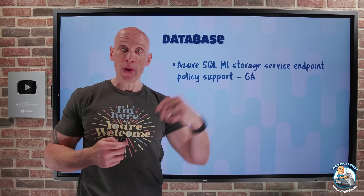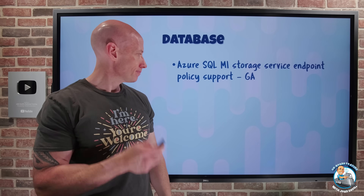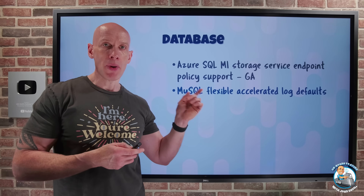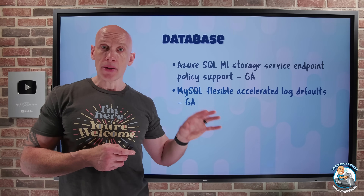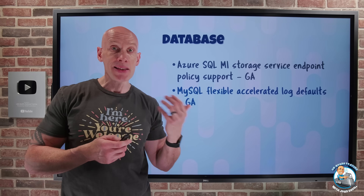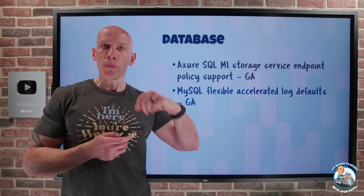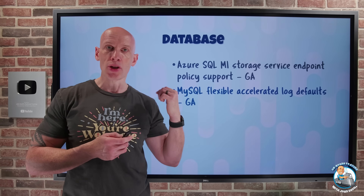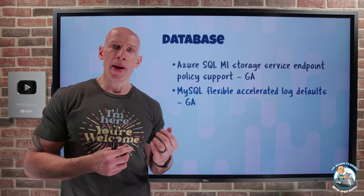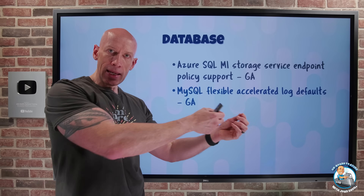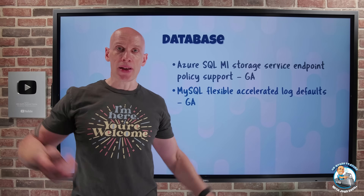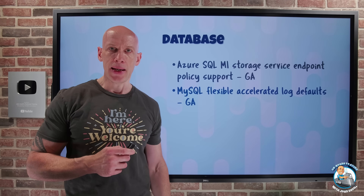MySQL Flexible now has accelerated logs by default. For any new instance you create, accelerated logs will be the default option. You can also enable it on any existing server, though there will be a restart required. The business critical tier can also support this with customer managed key. Accelerated logs are all about reducing the commit latency, which improves throughput — potentially up to double. And the great thing is there's no extra cost for this, so there's no downside in turning it on.